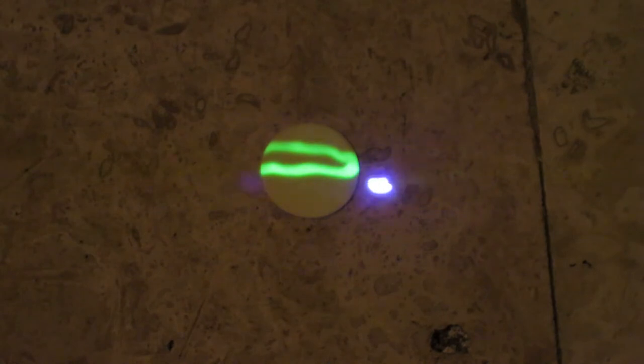However, if we use a violet laser, which has a shorter wavelength and higher energy, the sticker glows. This glow is called phosphorescence.